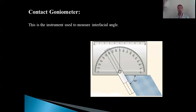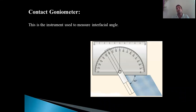Contact goniometer is the instrument used to measure the interfacial angle. We usually measure the interfacial angle in the lab using the contact goniometer. On the protractor, a scale-like feature is pivoted and you place your interfacial angle of interest as shown in the diagram, and you can measure the interfacial angle with this instrument. Thank you very much — if you have any questions, you can ask. The session is open for questions.